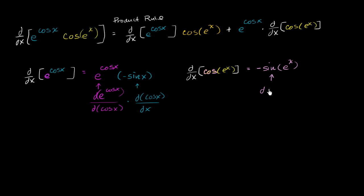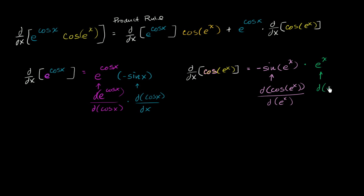We can view this as the derivative of cosine of e to the x with respect to e to the x. Then we multiply that times the derivative of the something with respect to x. The derivative of e to the x with respect to x is just e to the x.